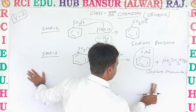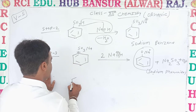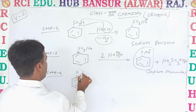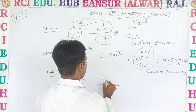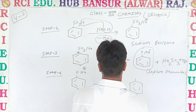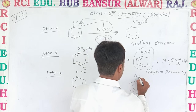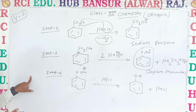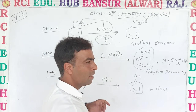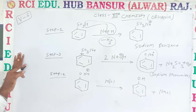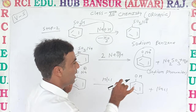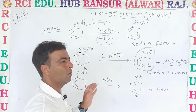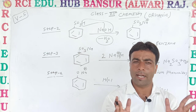Step number four: sodium phenoxide (O−Na+) in the presence of HCl breaks down to give O-H (phenol) plus NaCl. There is formation of phenol as the major product. This reaction goes from benzene to sodium phenoxide ion as intermediate, and from sodium phenoxide ion to formation of phenol.